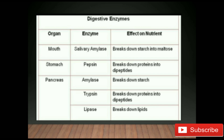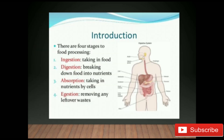There are four stages to food processing. The first is ingestion, the second is digestion, the third is absorption, and the fourth is egestion. Ingestion means taking in food; digestion means breaking down food into nutrients; absorption means taking in nutrients by cells; and egestion means removing any leftover waste.